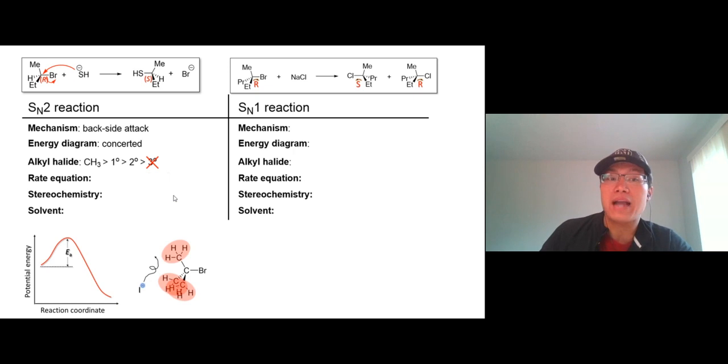The rate equation is the bimolecular reaction, suggesting there's a direct collision between the nucleophile and the electrophile. The stereochemistry: since it does backside attack, we get inversion of configuration. Start with R, you get S; start with S, you get R.